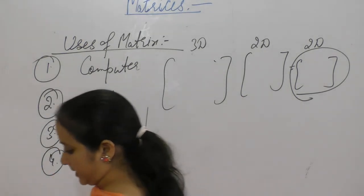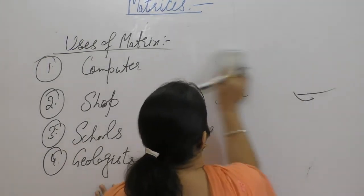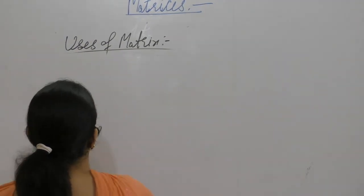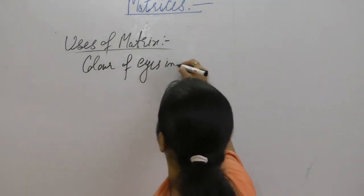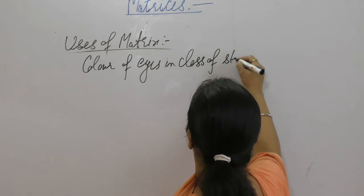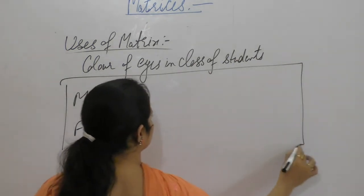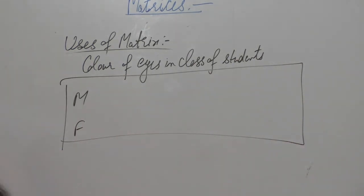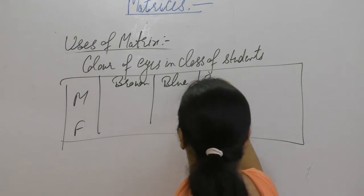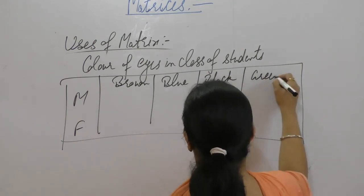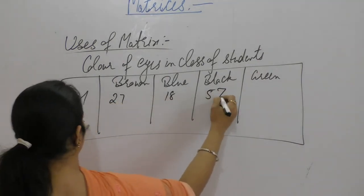Let us take some more examples of matrices. Suppose we want to find color of eyes in class of a student. Students are male and female. Color is brown, blue, black, and green.